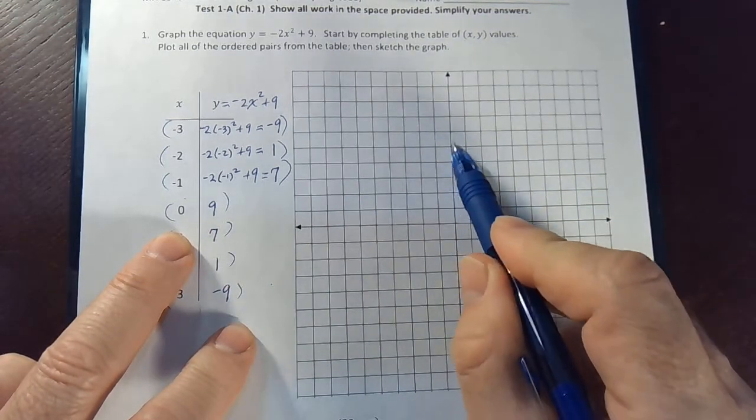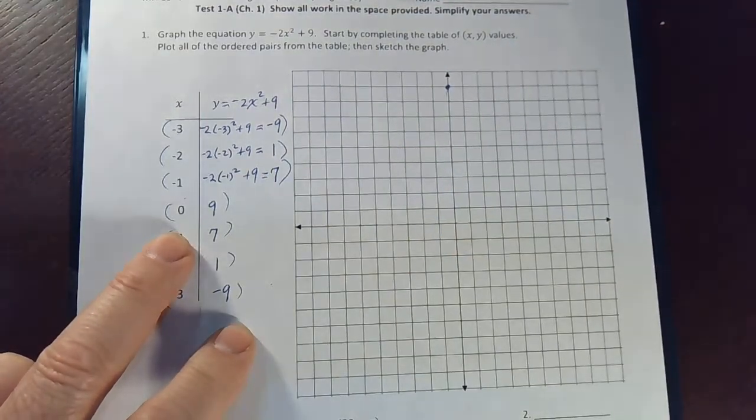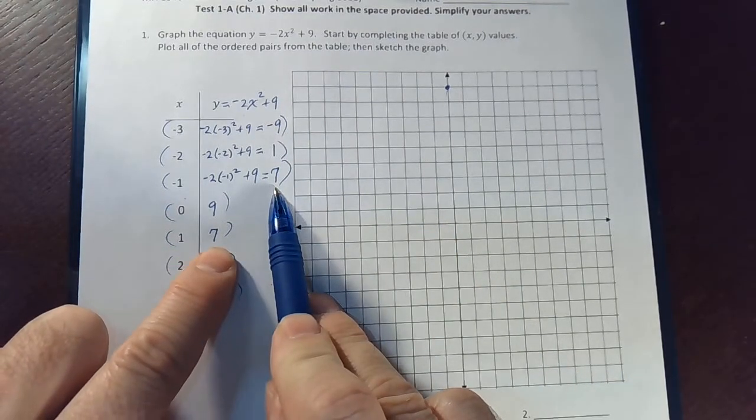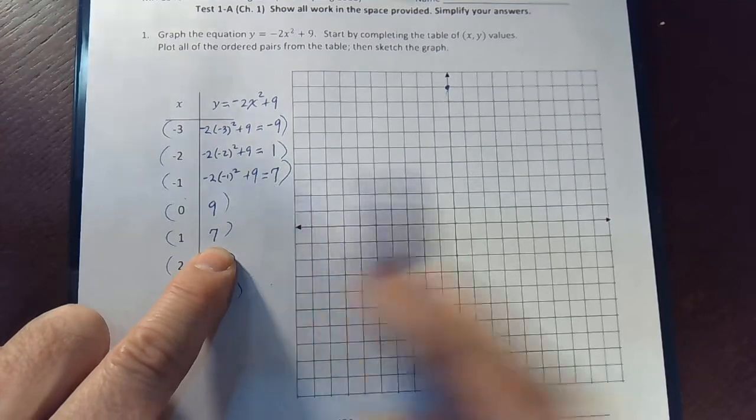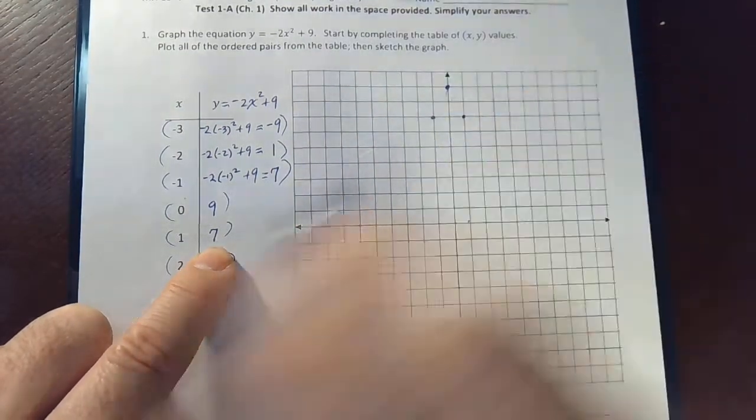1, 2, 3, 4, 5, 6, 7, 8, 9. And now at 1 and negative 1, in both cases, we're going to go up to a height of 7. 1 comma 7 and negative 1 comma 7. There and there.